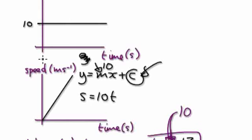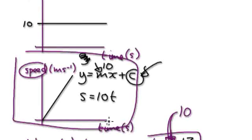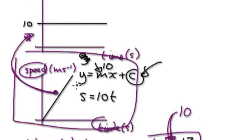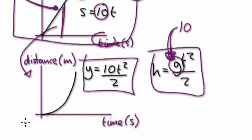This speed-time graph is the most important graph here, because if you work out the gradient of the speed-time graph, it represents the acceleration. And if you work out the area under this graph, it represents the distance traveled.